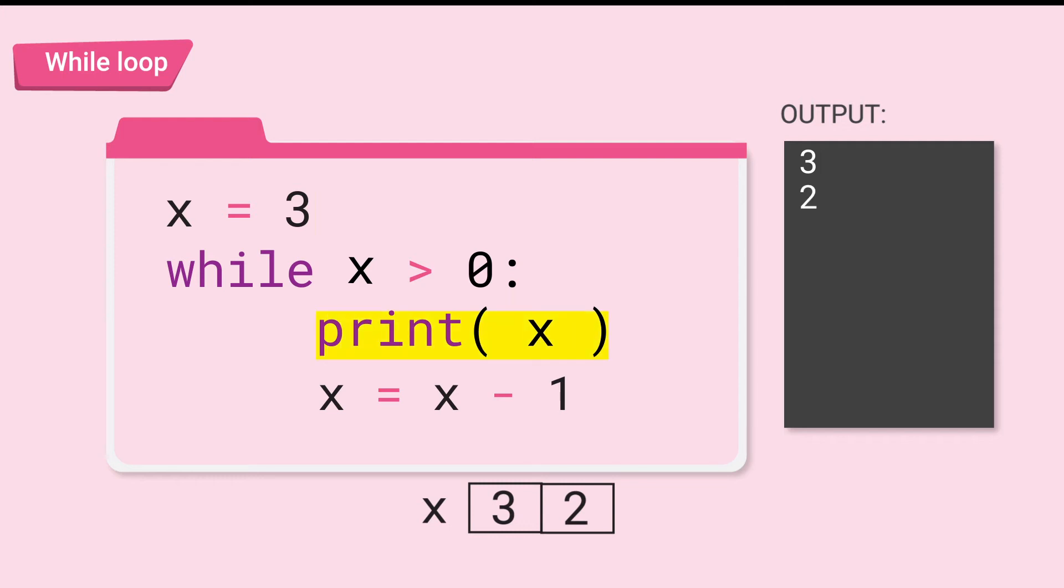Print x will print 2. Last line, x is 2 minus 1. Now x is 1. To the top again, is x greater than 0? Yes. 1 is greater than 0. Once again, enter the loop.